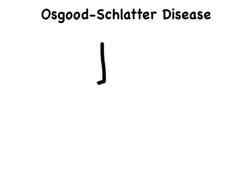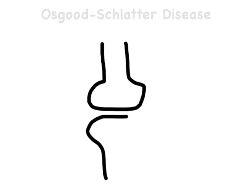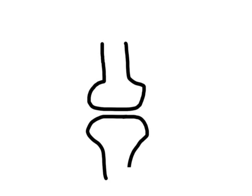Osgood-Schlatter's is a really funny name for a very common condition that happens in teens, and it probably is the most common cause of knee pain in teenagers.